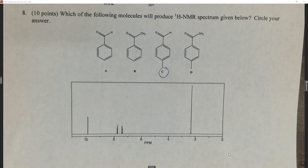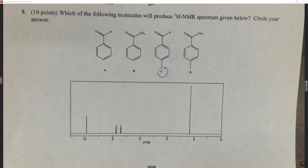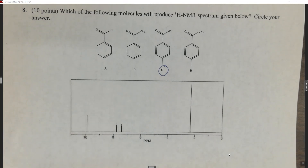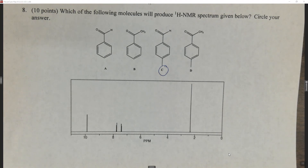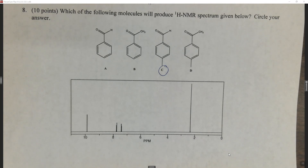That brings us to the end of this practice quiz. I hope you found it helpful and that it helps you prepare for the regular quiz. On the regular quiz you'll get different examples, so make sure you know your functional groups, common chemical shift positions for aldehydes, carboxylic acids, and aromatic rings, as well as your integration, splitting, and common IR stretches such as a broad OH peak between 3200 and 3600 cm⁻¹. Thanks for watching!